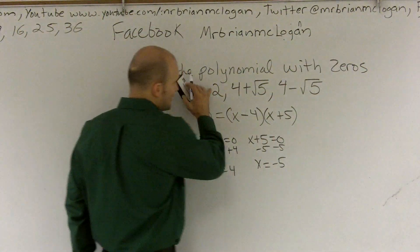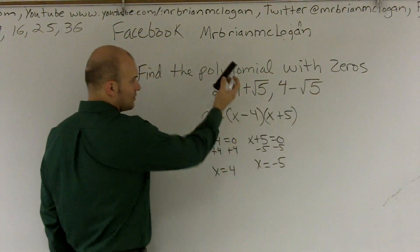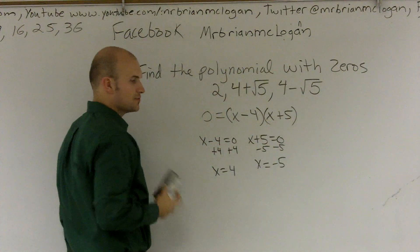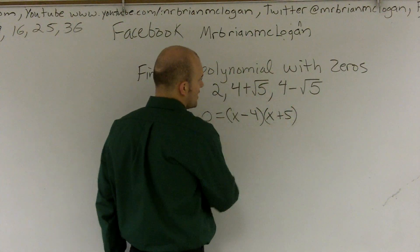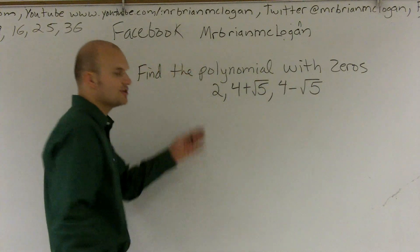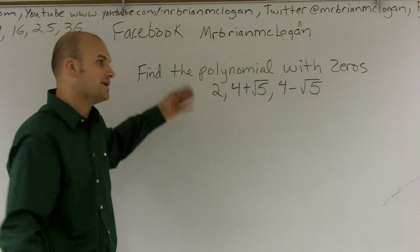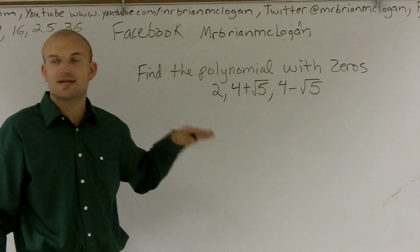So what we need to do is, we're given our zeros. We're given x equals 2, x equals 4 plus square root of 5, and x equals 4 minus square root of 5. So what we want to do is we need to, before we can write it as a polynomial, we need to be able to write it as a set of linear factors.